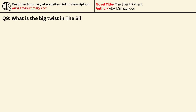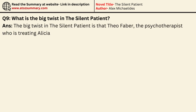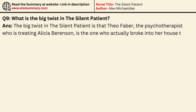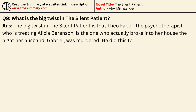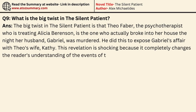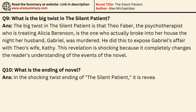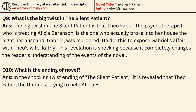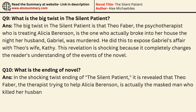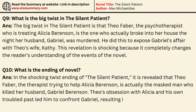What is the big twist in The Silent Patient? The big twist is that Theo Faber, the psychotherapist treating Alicia Berenson, is the one who actually broke into her house the night her husband Gabriel was murdered. He did this to expose Gabriel's affair with Theo's wife, Kathy. This revelation is shocking because it completely changes the reader's understanding of the novel's events. In the ending, it is revealed that Theo is actually the masked man who killed Gabriel Berenson. Theo's obsession with Alicia and his troubled past led him to confront Gabriel, resulting in Gabriel's death and Alicia's silence.